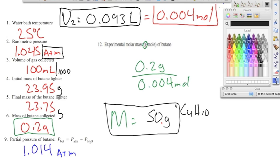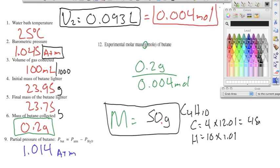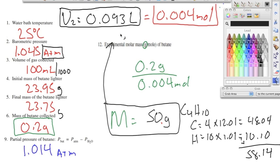Number thirteen asks us to find the theoretical molar mass of butane. Butane is C4H10, so we have four carbons and ten hydrogens. Multiplying by their atomic masses from the periodic table, we get 48.04 for carbon and 10.10 for hydrogen. Adding these gives 58.14 grams per mole. The molar mass from number twelve is our experimental value, while 58.14 is our theoretical or actual molar mass.